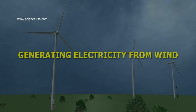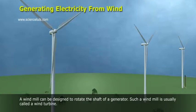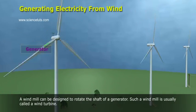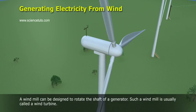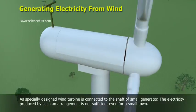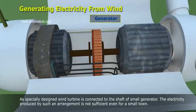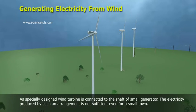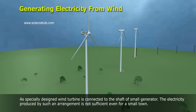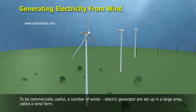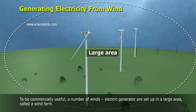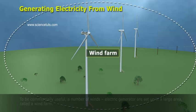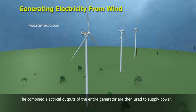A windmill can be designed to rotate the shaft of a generator. Such a windmill is usually called a wind turbine. A specially designed wind turbine is connected to the shaft of a small generator. The electricity produced by such an arrangement is not sufficient even for a small town. To be commercially useful, a number of wind electric generators are set up in a large area called a wind farm. The combined electrical outputs of the entire generators are then used to supply power.